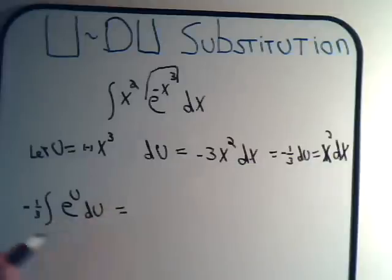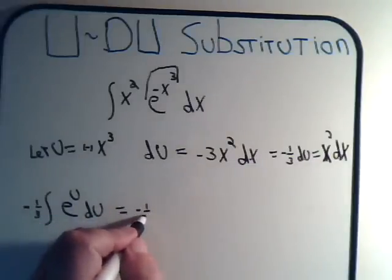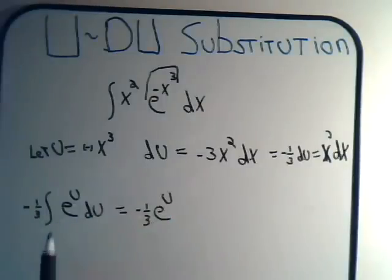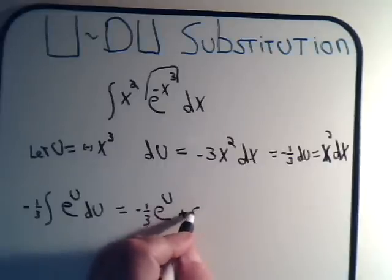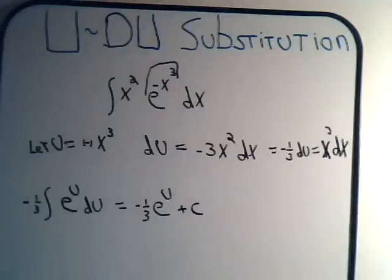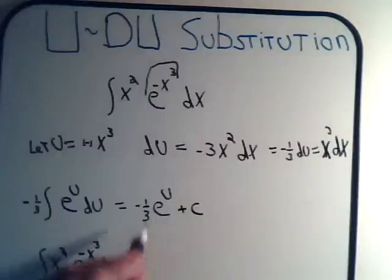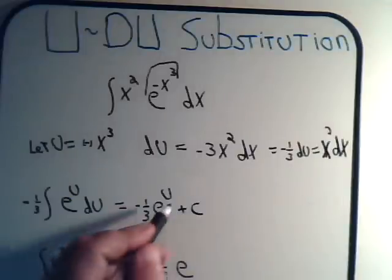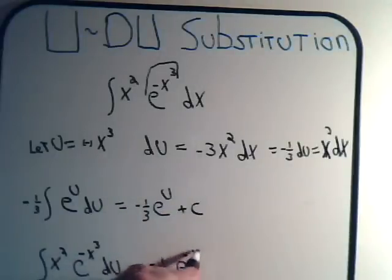Get this to the outside, and now we're all set to go. This would just be minus one-third e to the U, and there's no limits here, so we have an arbitrary constant, and that would be it. But remember we made a substitution here, U is this, so we can go back to our original integral.